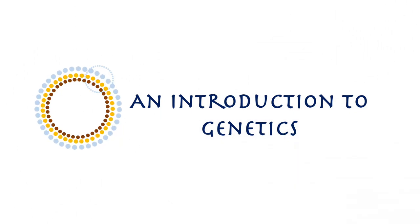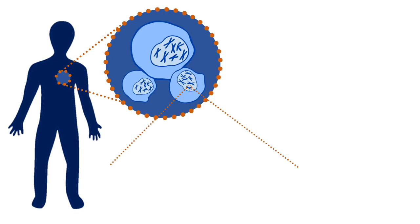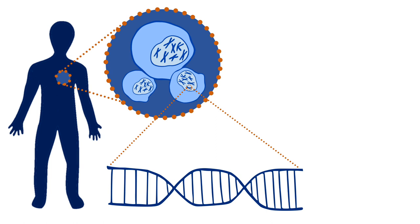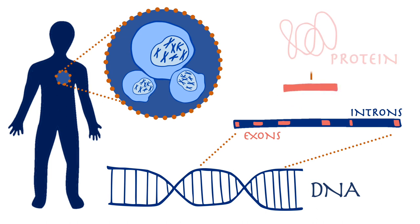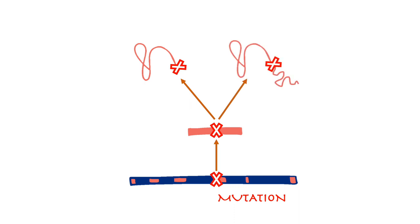Genetics. Our bodies are made up of millions of cells. In the centre of these cells is our genetic material — it's called our DNA. Our DNA contains our genes. Genes are divided into different sections called exons and introns. Exons code for proteins which make up the cells, tissues and organs of our bodies. If there's a mistake in an exon which affects the quantity or quality of protein, we call that a mutation. In order to find mutations, scientists use clever techniques that allow them to look at our genetic code. These techniques are called genetic sequencing.